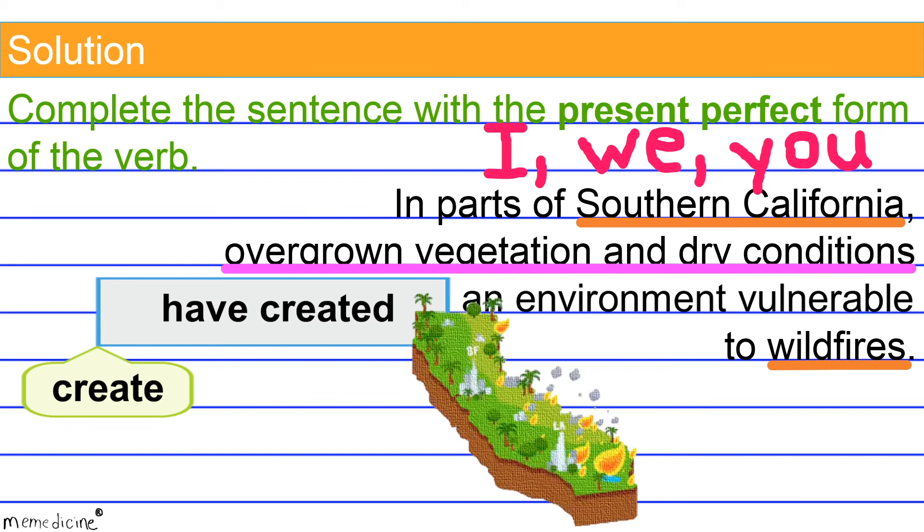All right. So dry conditions precipitated the perfect conditions for wildfires before the fires actually happened. I also want you to take into consideration that the main verb create is regular. Therefore, its past participle verb form, created, is going to be the same as its simple past tense verb form, created. This is just additional information.